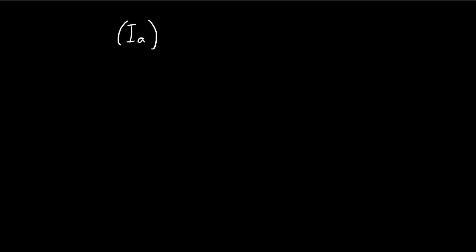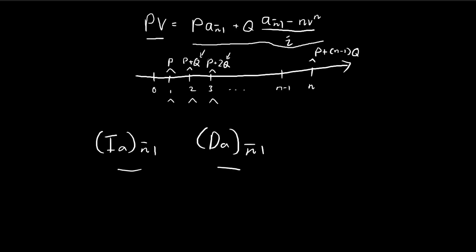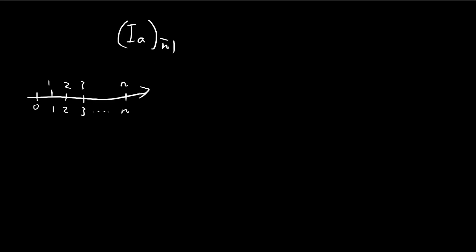The increasing annuity refers to the payment scheme that pays one dollar at time 1, two dollars at time 2, three dollars at time 3, and so on, all the way to time n, where you receive n dollars. Using the formula we derived, this corresponds to the case where P is equal to 1 and Q is equal to 1. When P equals 1, the first payment is 1; when Q equals 1, the second payment is 1 plus 1 equals 2, and the third is 1 plus 2 equals 3 — so you get payments of 1, 2, 3, 4, all the way to n.